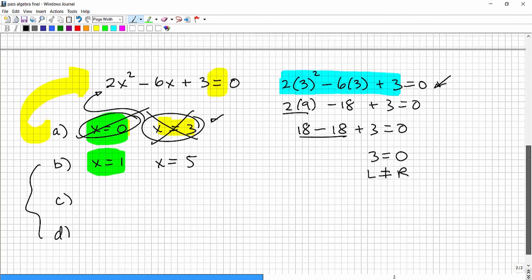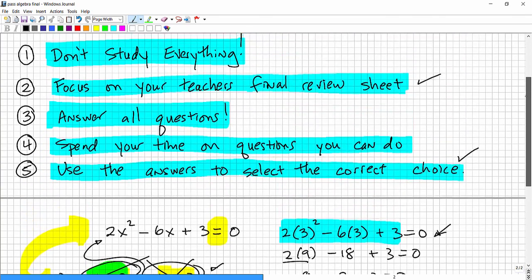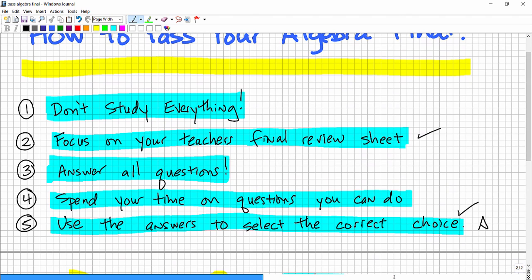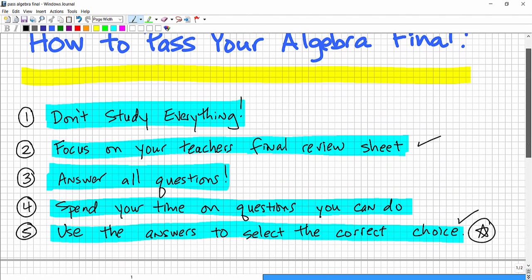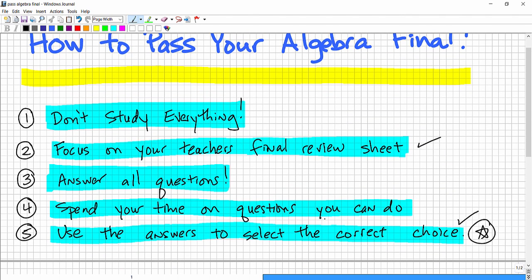So between this tip, let's kind of review the other tips, okay? Use your answers to select the correct choice. Huge, huge, important tip, okay? Spending the time on the questions you can do, all right? So if you see an equation, for example, you would want to do what I just showed you to do, spend your time there. Nevertheless, on all multiple choice or any questions, answer everything, okay? And then don't try to study everything. Don't try to be a hero, okay? Use that teacher, your teacher's final review sheet, and kind of use that. And by the way, pay careful attention.